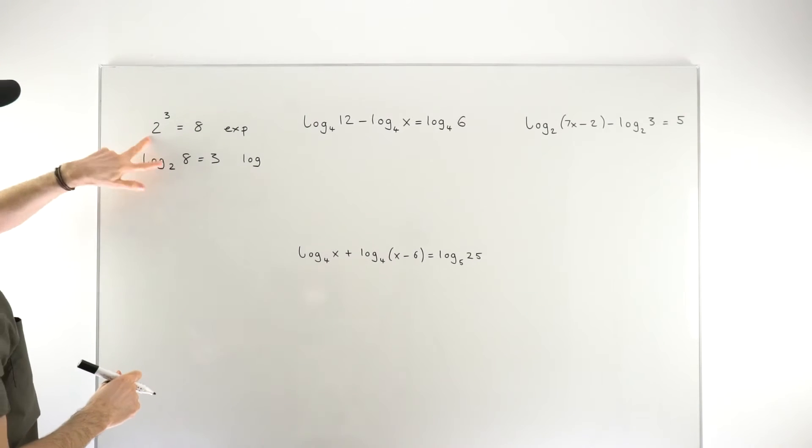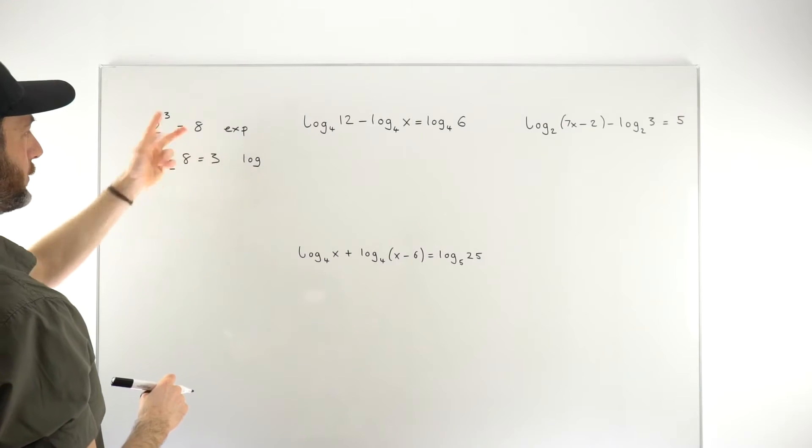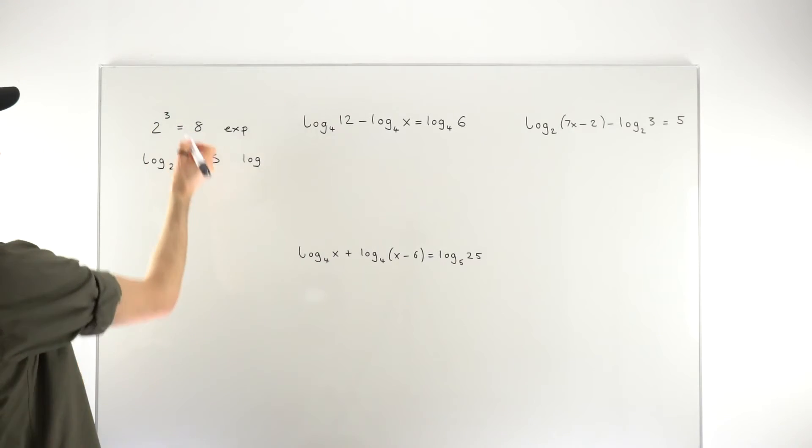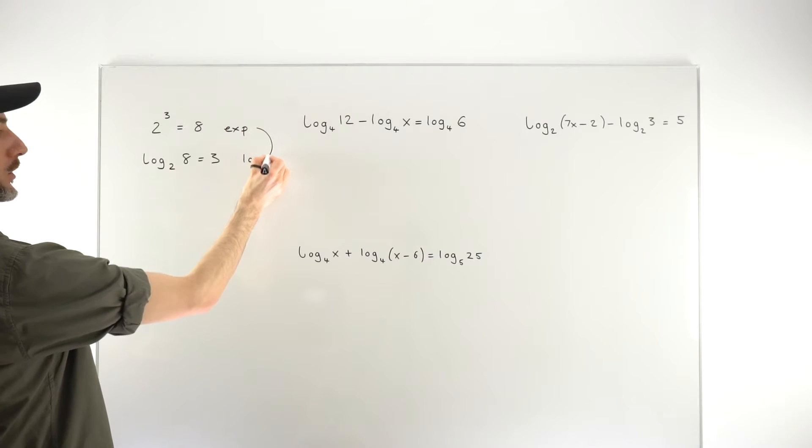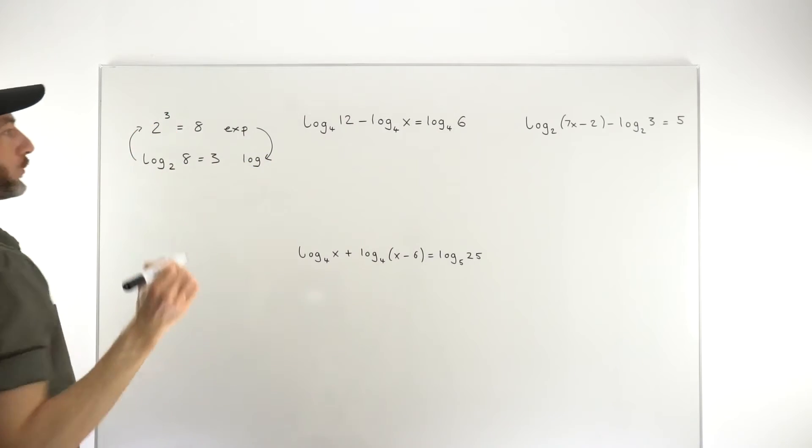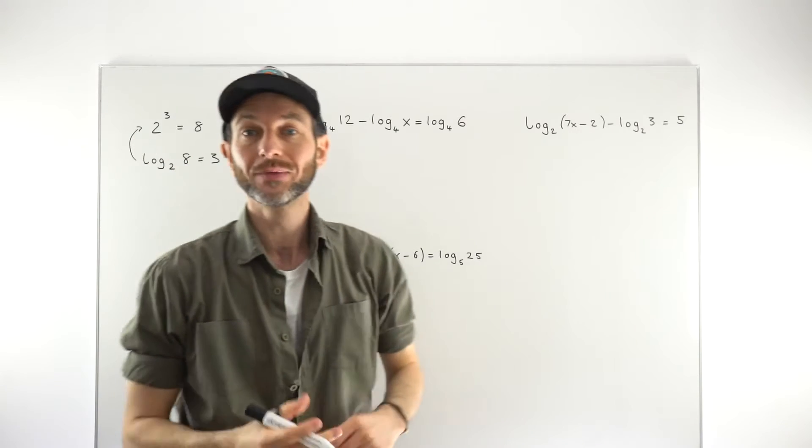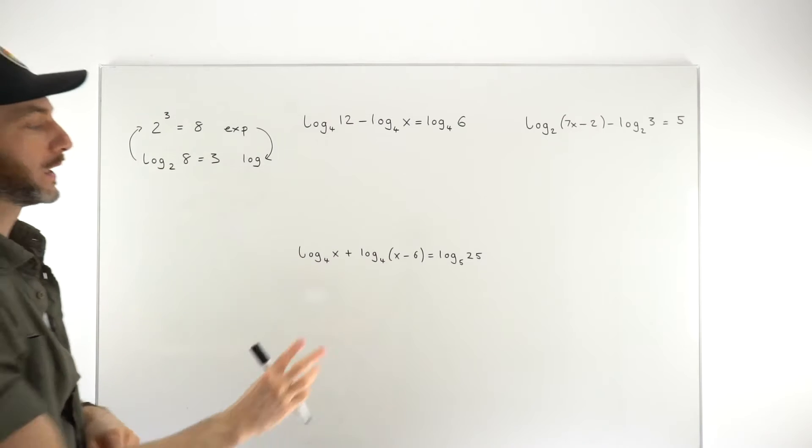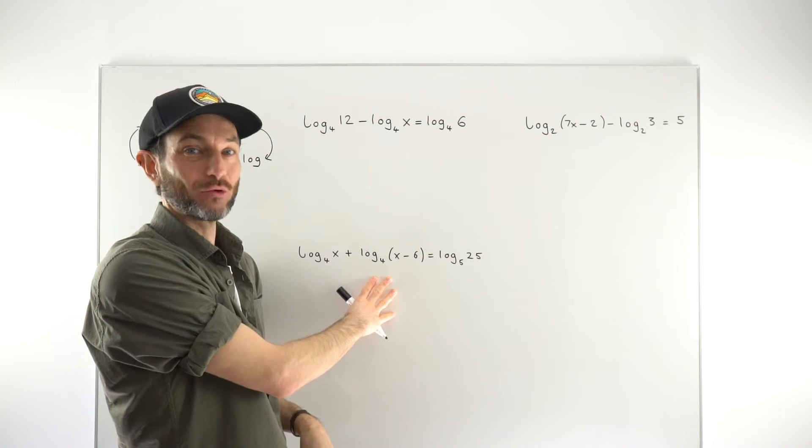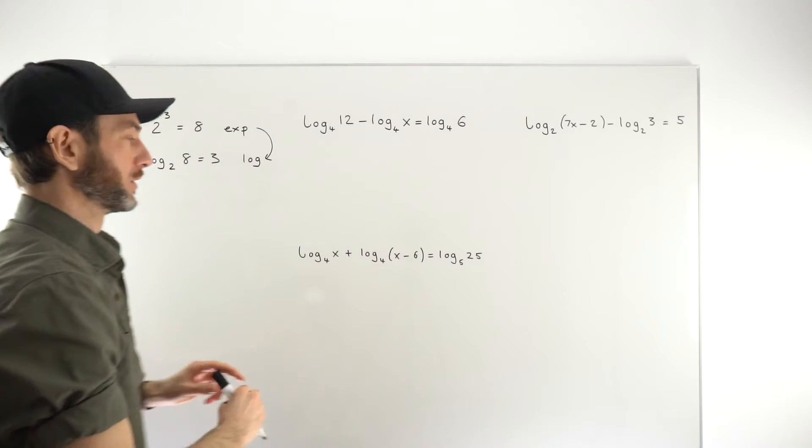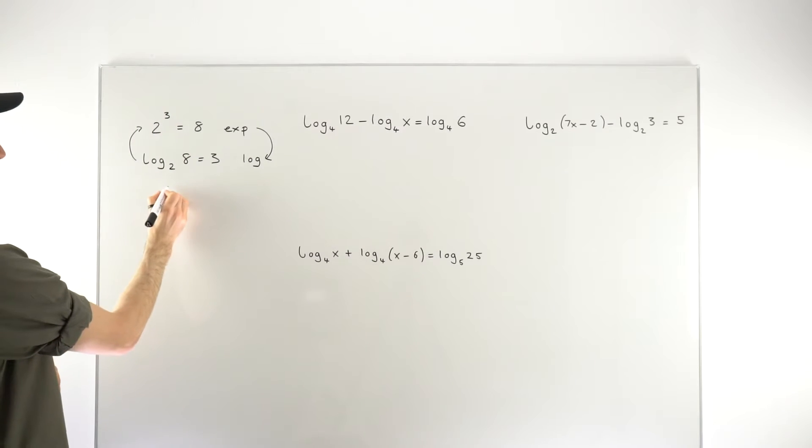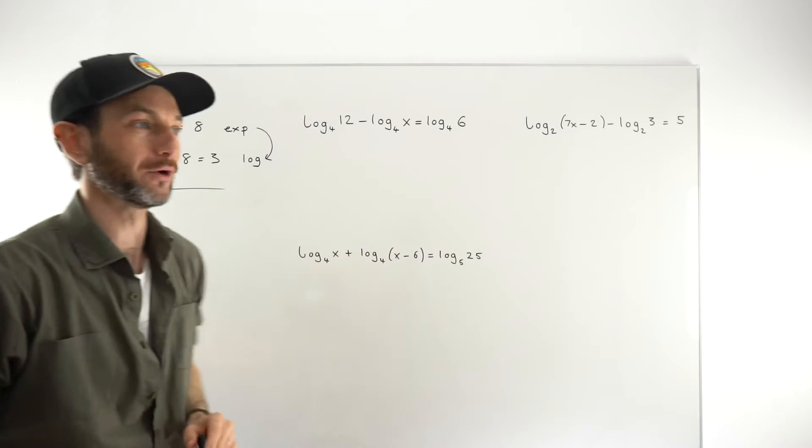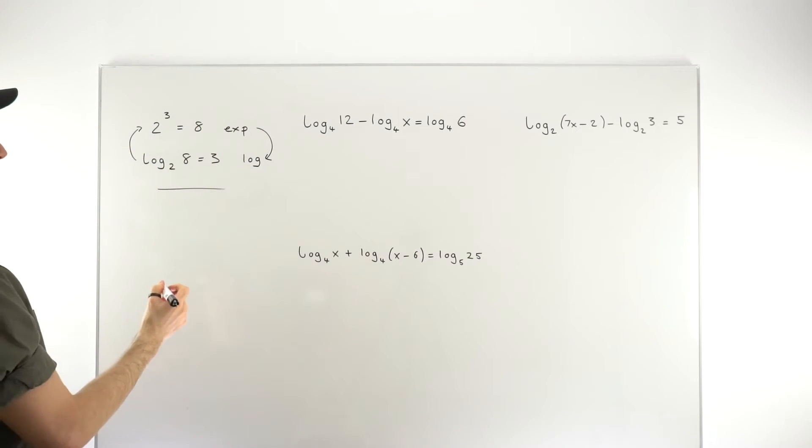The key is just noticing that the base is the same. And then these numbers get flipped around when you turn it into either the log form or into the exponential. You can turn the exponential form into the log form or the log form into the exponential form. Turning the log form into the exponential form is one of the techniques we're going to use to get rid of logarithms in our equations. That's not one of the rules of logarithms, just the fundamental idea of what a logarithm is.